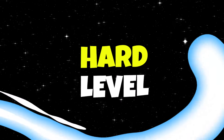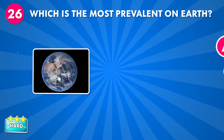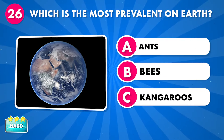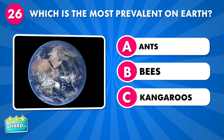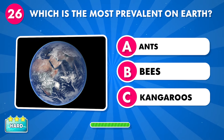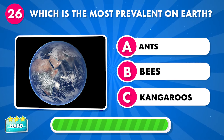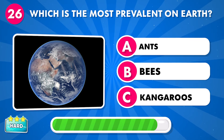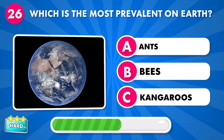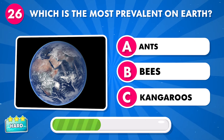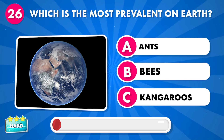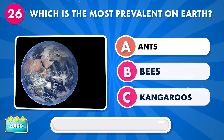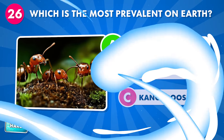This will be very challenging. Which is the most prevalent on Earth? A: ants, B: bees, C: kangaroos. It's ants.